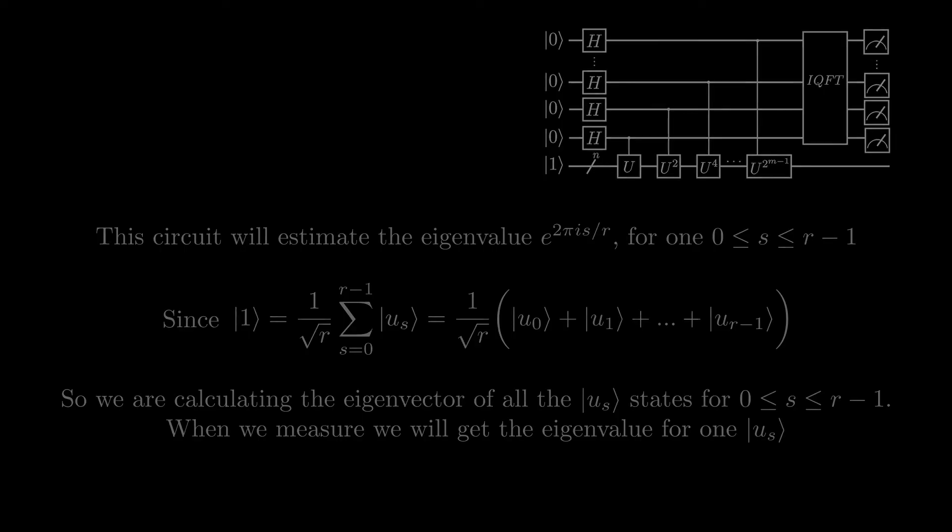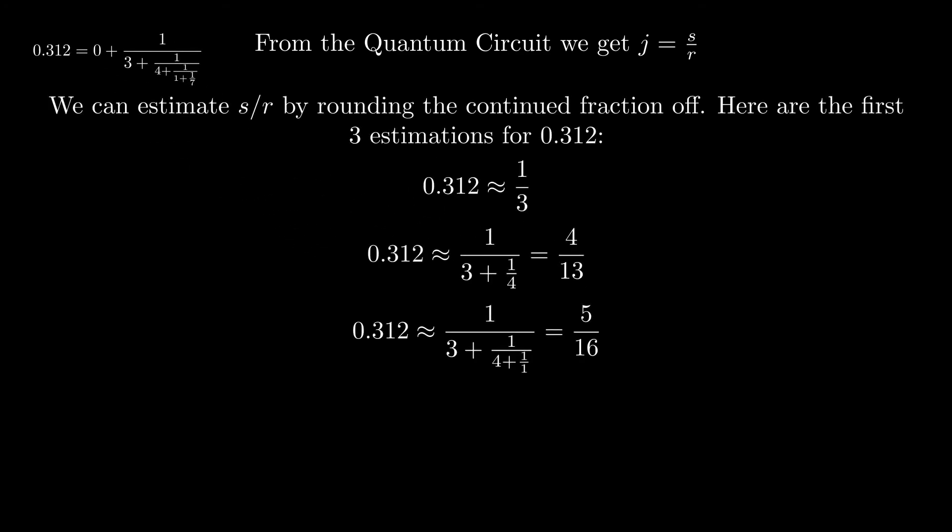Now we have a decimal number j, which is equal to s over r. That is the quantum part of the algorithm done. Now we estimate the values of s and r by using a technique called continued fractions. Here is an example with the decimal 0.312. We start by writing it as a fraction, then we flip the fraction. We continue this process until we have the number 1 in the numerator. By representing a decimal in this way, we can approximate its value with a fraction by rounding off the continued fraction. Here are the first three approximations for the decimal 0.312.